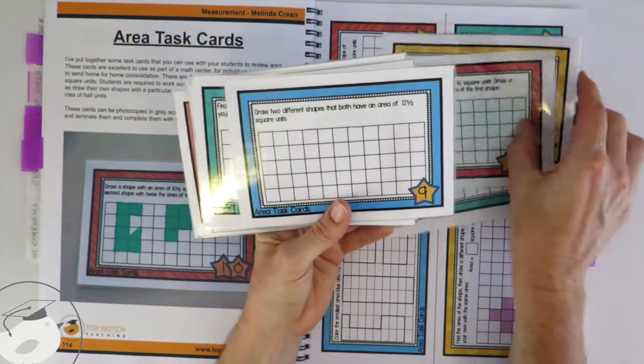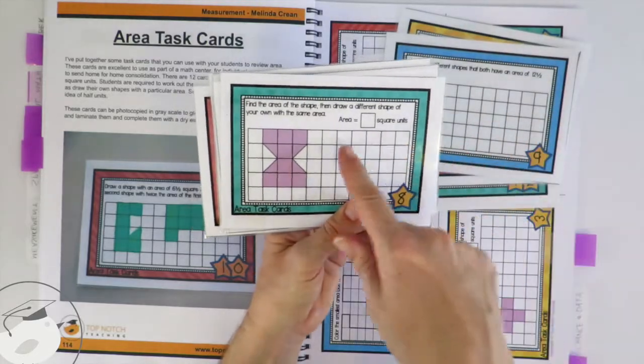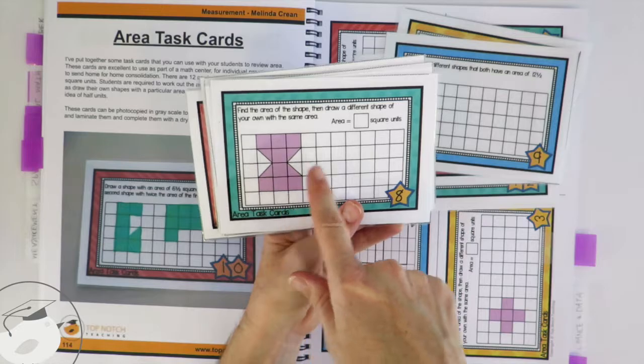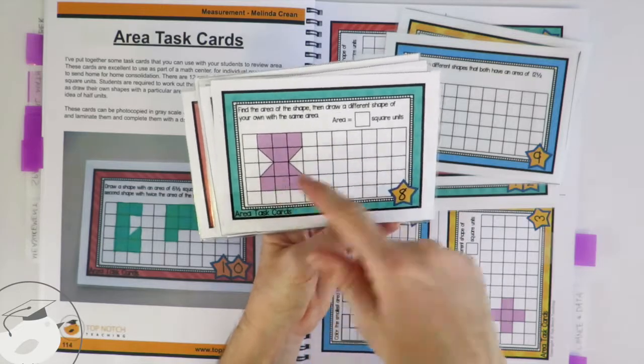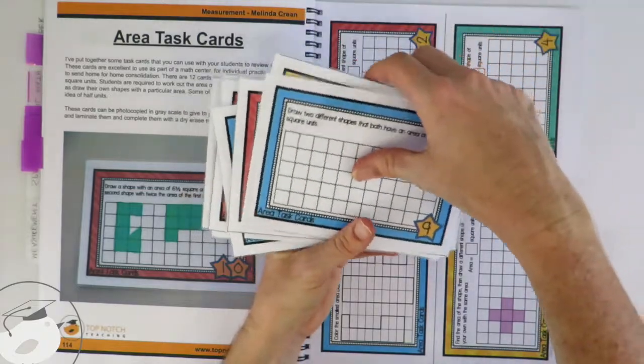You've also got two different shapes they have to draw with the same area, and this one they need to find out what the area of the shape is and then they need to draw a different shape that also has the same area. So you'll find there's quite a few different cards there for getting your students to practice area.